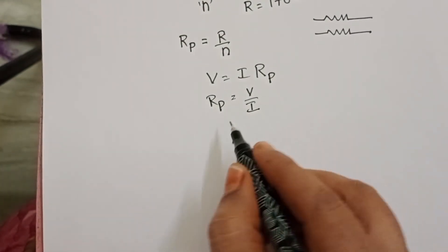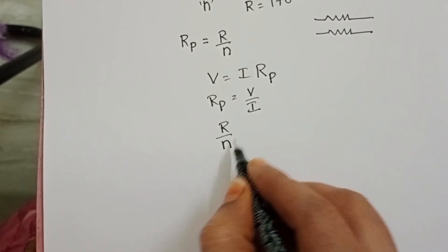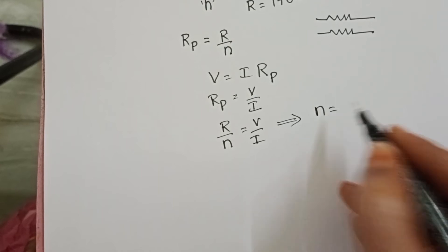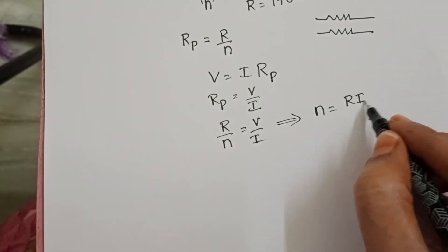Here R equals R by N. We have to find the N value only. So from this, N equals R times I by V.